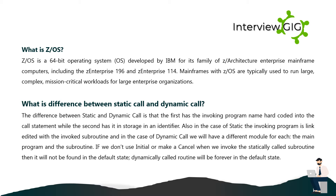What is z/OS? z/OS is a 64-bit operating system developed by IBM for its family of z architecture enterprise mainframe computers, including the z Enterprise 196 and z Enterprise 114. Mainframes with z/OS are typically used to run large, complex, mission-critical workloads for large enterprise organizations.